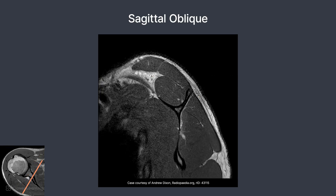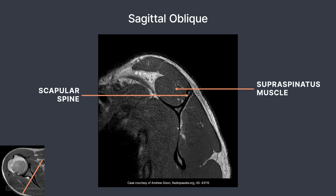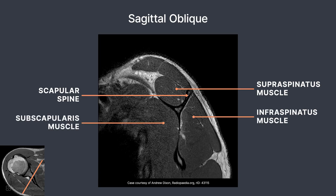Here we have a full slice through the scapular body, which somewhat looks like a Y. Breaking down the muscle names, you can see how their names are based on their location. The supraspinatus is located superior to the scapular spine. The infraspinatus is located below the scapular spine, and the subscapularis is located underneath the scapula. This has been an overview of shoulder anatomy on an MRI scan. Thanks for watching.